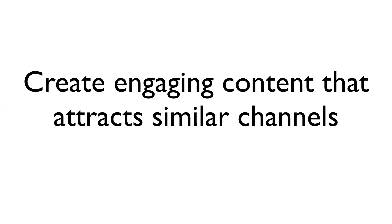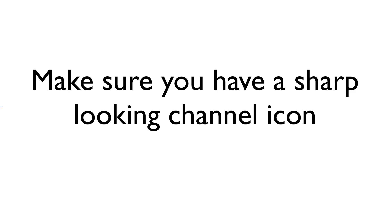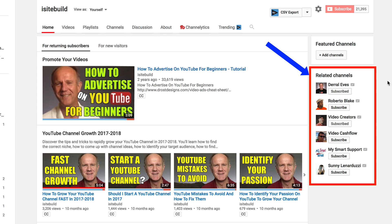Create engaging content that attracts similar channels. Make sure your channel has YouTube partner status. Make sure you have a sharp-looking channel icon, preferably your face, so it stands out in your related channels section. Keep in mind that you can't control what appears in the related channels section on your own channel — if you don't like the channels you see there, you can remove the section completely.